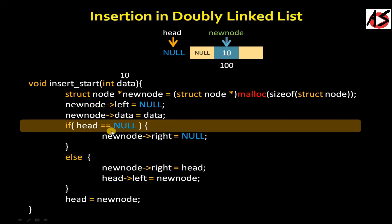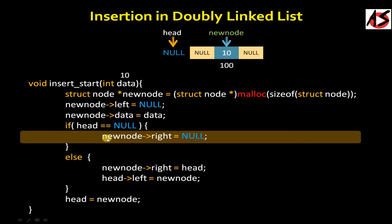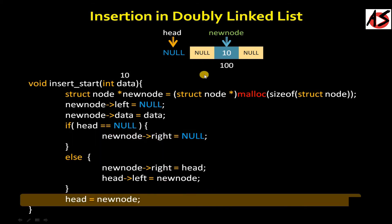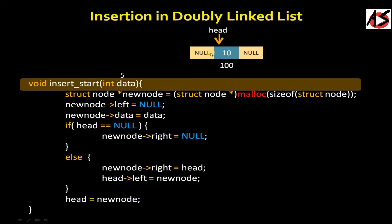Then we check the condition: if head equals null. Here the head pointer is pointing to null, so we go inside the if condition and set the new node's right pointer also to null. You can see the new node with both left and right pointers null. Then we set head equal to new node, dragging the head pointer to the new node. The list is now ready with one node.